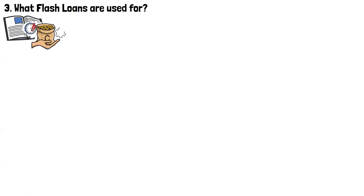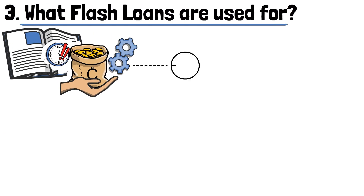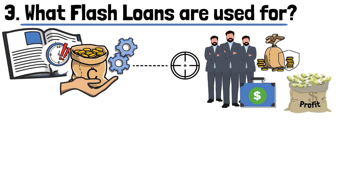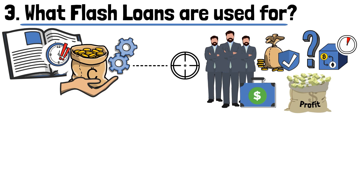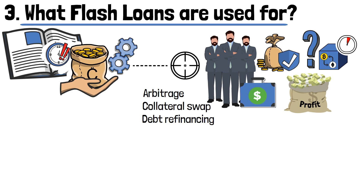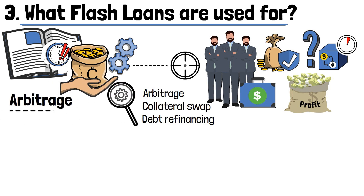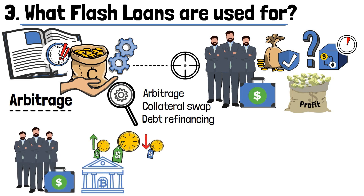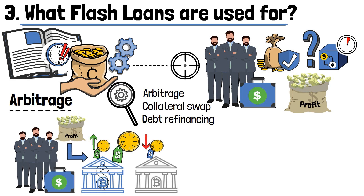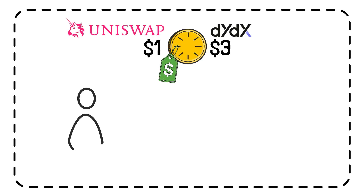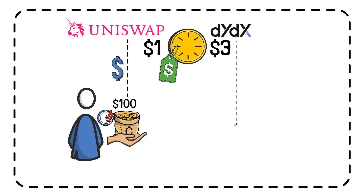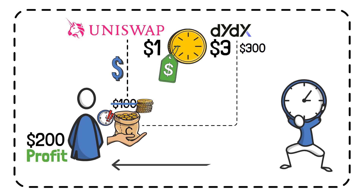The main purpose of flash loans is to allow investors to secure profit without placing their own assets at risk. There are a few ways to do this: arbitrage, collateral swap, and debt refinancing. Using arbitrage, investors can take advantage of token price differences on two separate crypto trading platforms. For example, if a token trades for $1 on Uniswap but $3 on DDIX, you take a flash loan of $100, purchase the token on Uniswap, trade those tokens on DDIX for $300, repay the $100 borrowed, and secure a $200 profit — all executed in just a few seconds.